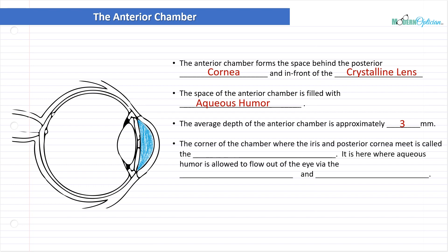The corner of the chamber, where the iris and the posterior cornea meet, is called the iridocorneal angle. We just call it the angle. It's here where the aqueous humor is allowed to flow out of the eye via the trabecular meshwork and the canal of Schlemm. I'm going to pull out a pen tool and show you what we're talking about. It's this area right around there, the angle. That's where all the drainage takes place.